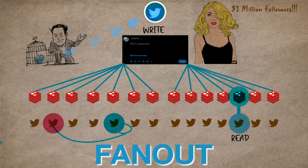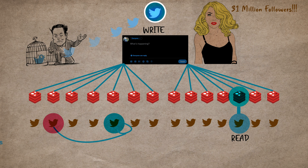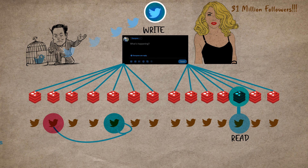To avoid this, Twitter came up with a hybrid approach. If a person like Lady Gaga has too many followers and tweets something, fanout does not occur for them. Instead, the tweets of such users are merged into the timeline only when someone requests their homepage. Fast forward to 2022, the same Twitter architecture is feeding 230 million-plus users, and nothing much has changed at a high level. The goal is to have a message flow to a user in no more than 5 seconds.